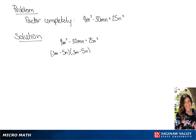So this will be factored into (3m minus 5n) squared.